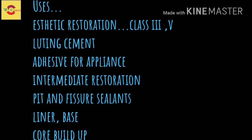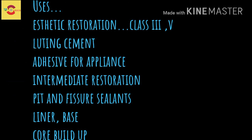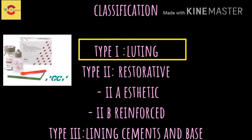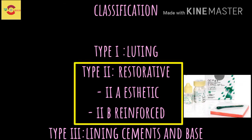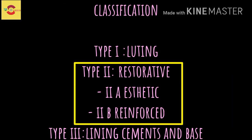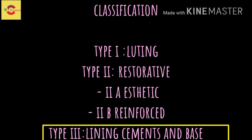GICs are also used for intermediate restorations, pit and fissure sealants, liners and bases, and as core build-up materials. They are classified based on their function: Type 1 is the cement used for luting crowns, bridges, and orthodontic brackets; Type 2a is the aesthetic restorative cement; Type 2b is the reinforced restorative cement; and Type 3 is the lining cement or base.